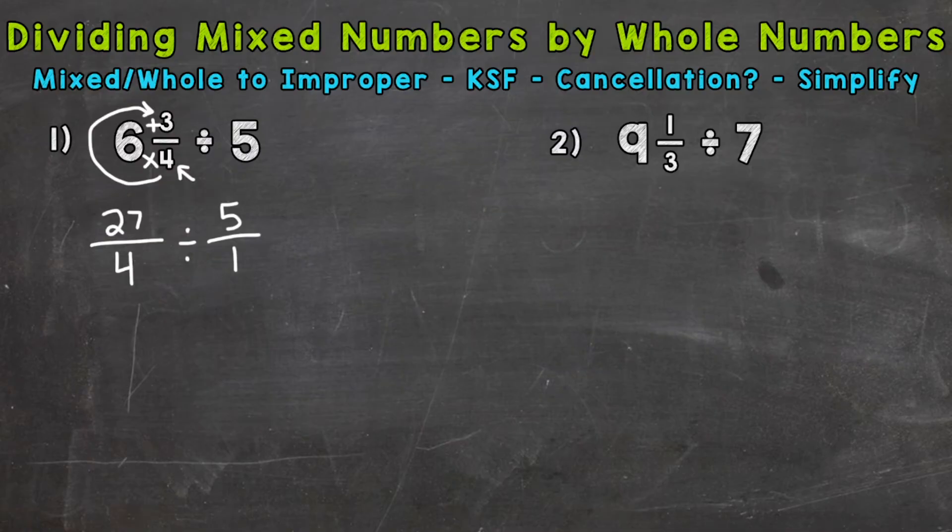So keep, switch, flip. Those are the steps of dividing fractions. So the K, keep, that just means that we keep our first fraction the same. So we are going to rewrite our problem, 27 over 4. Keep it the same.